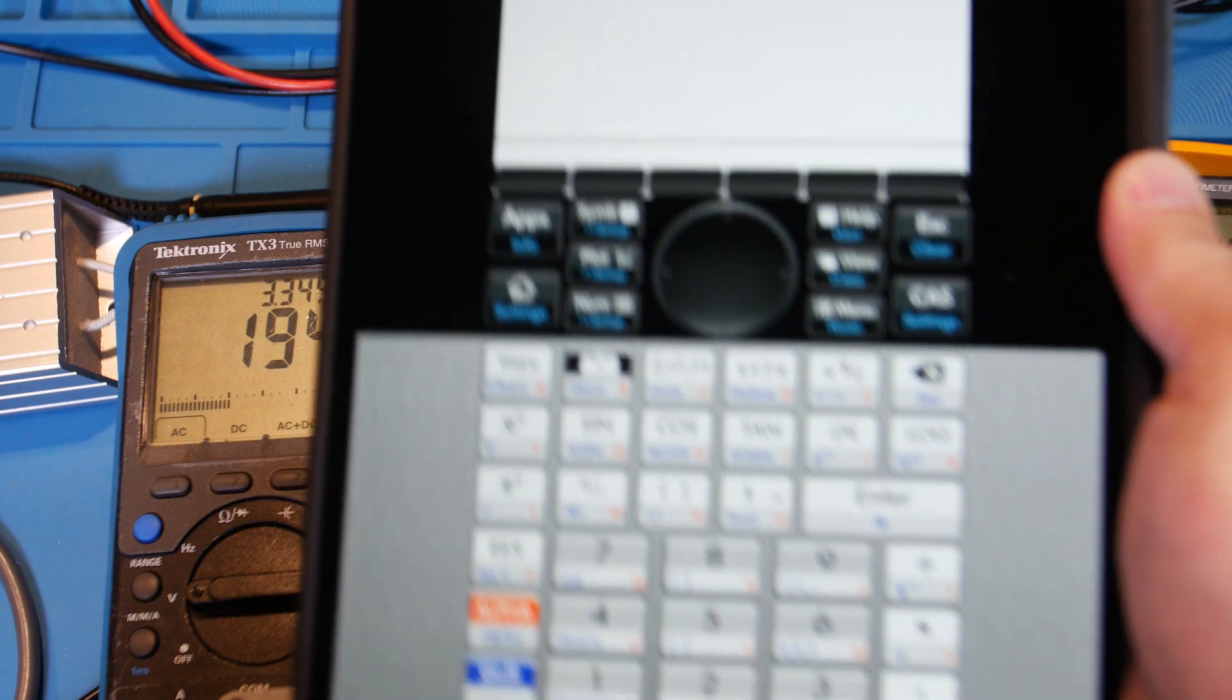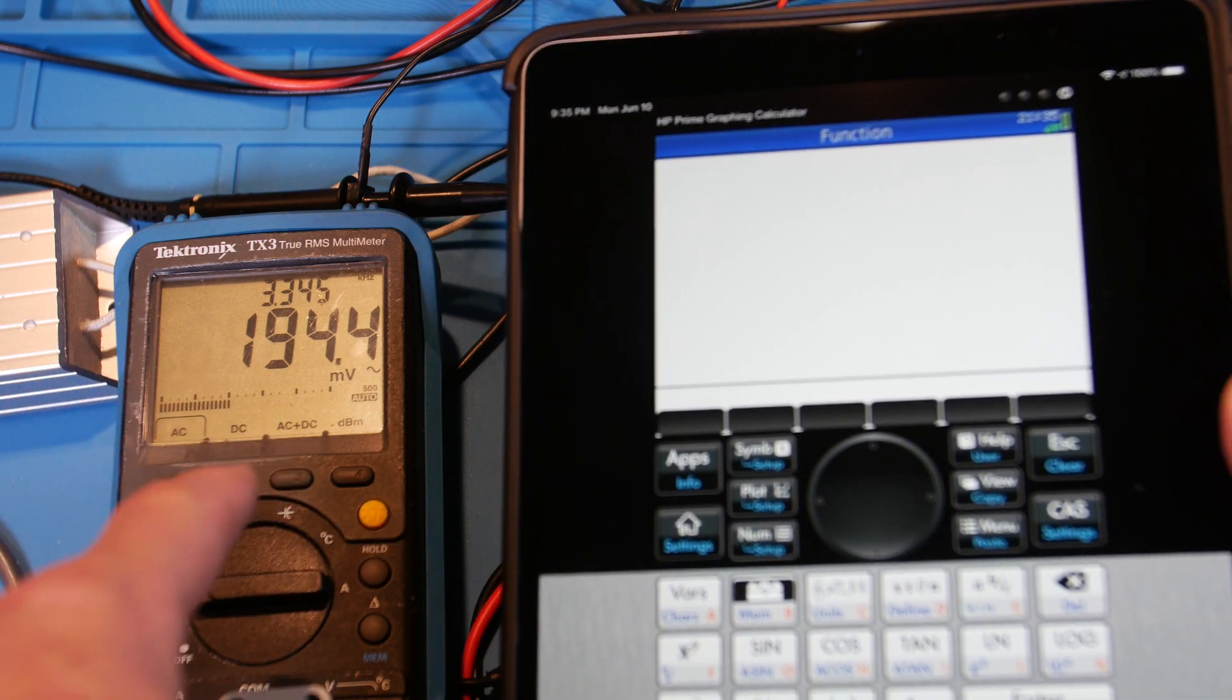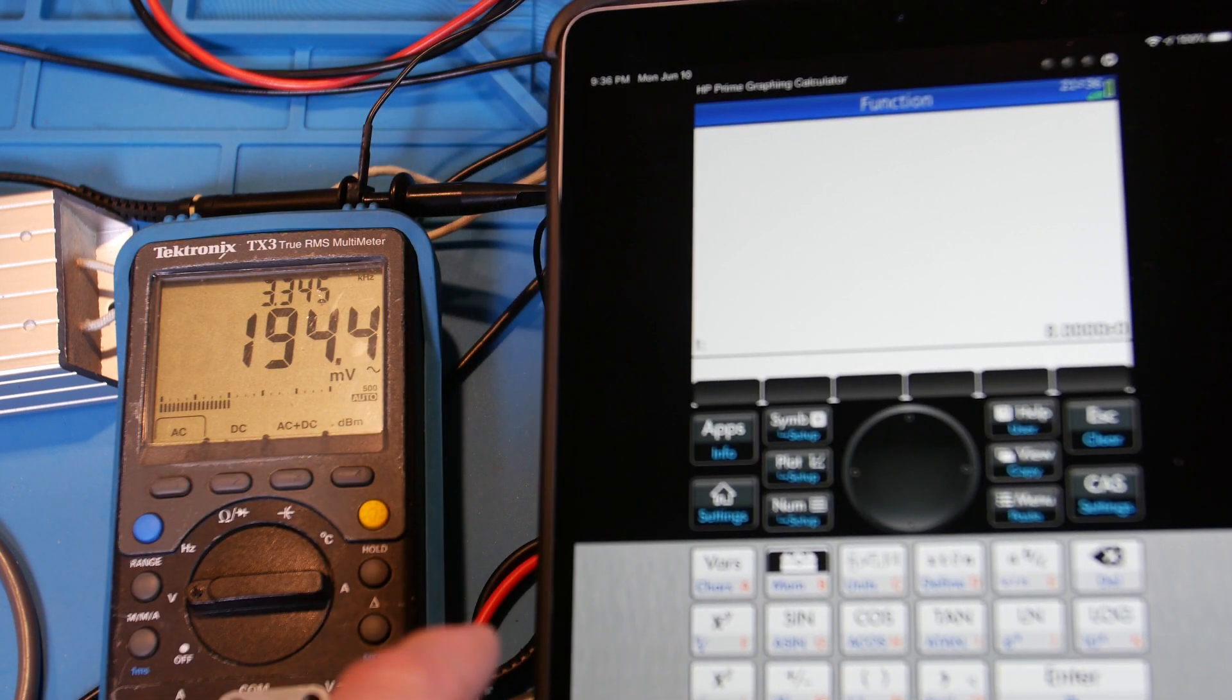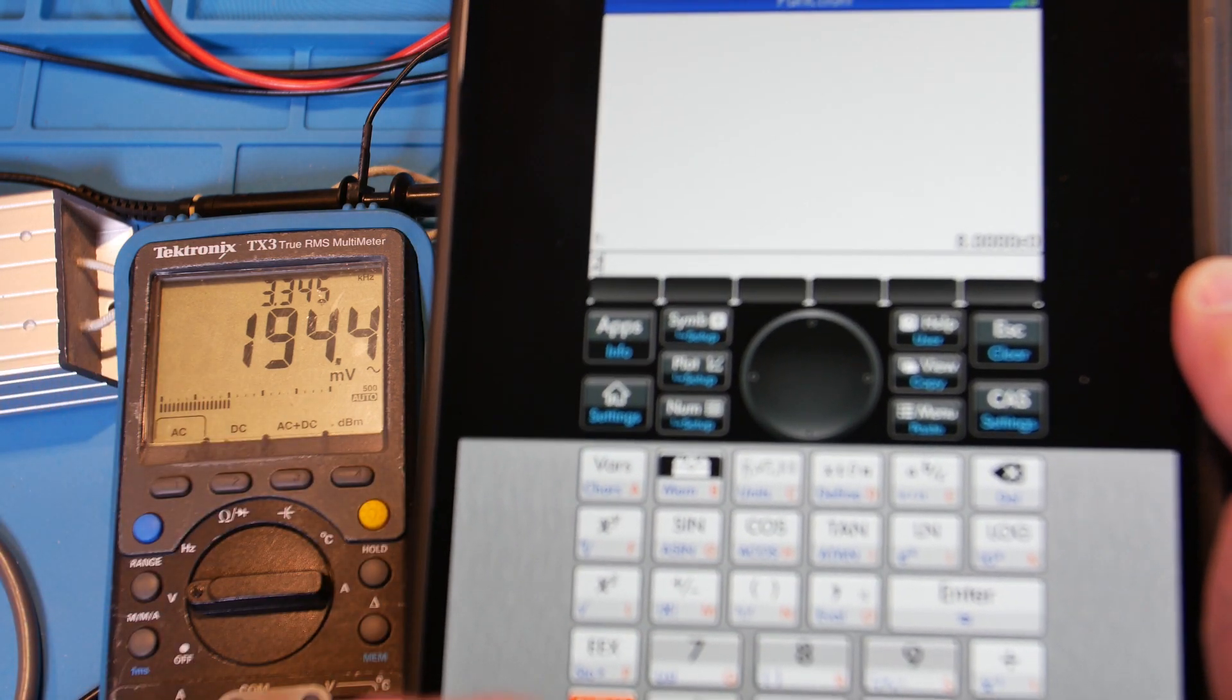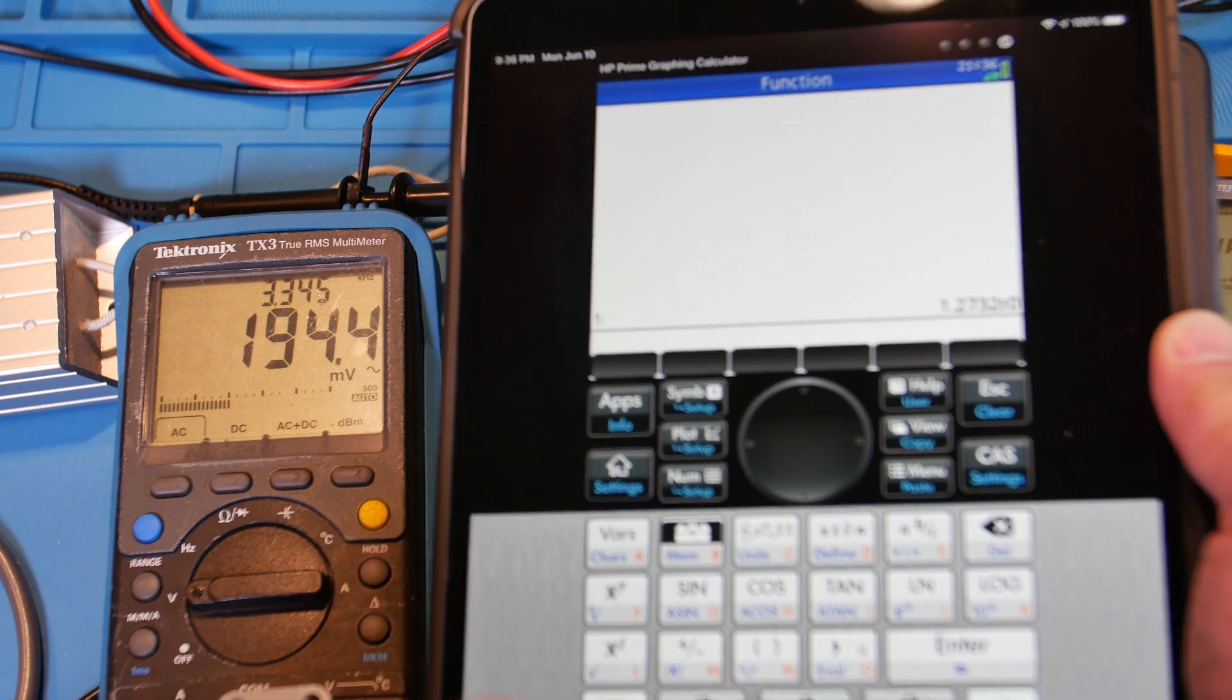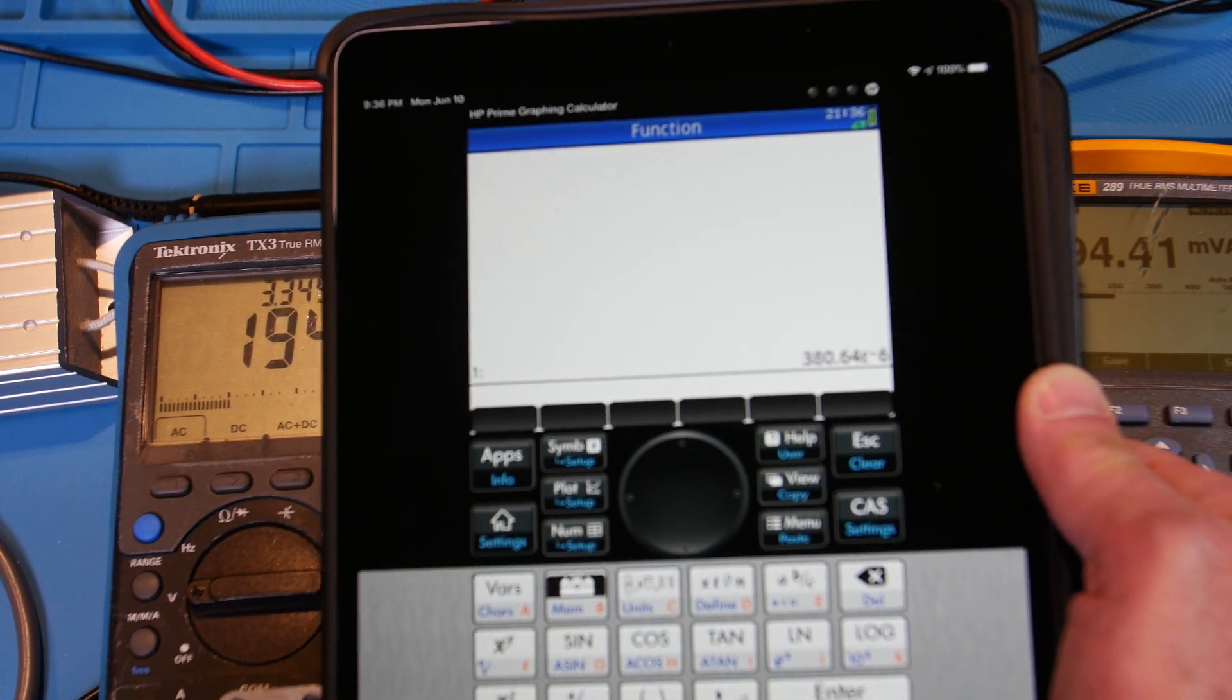So that frequency is 3.345 kilohertz. So let's see how close we got to that. X of L is equal to 2 pi F L. So X of L is 8 ohms. So we put in 8 ohms. That's equal to 2 pi F L. So we'll divide all that stuff out and leave L by itself. So 2 divide pi divide. And F is 3.345. 3.345 divide. That's 380 microhenries, if you can see that.